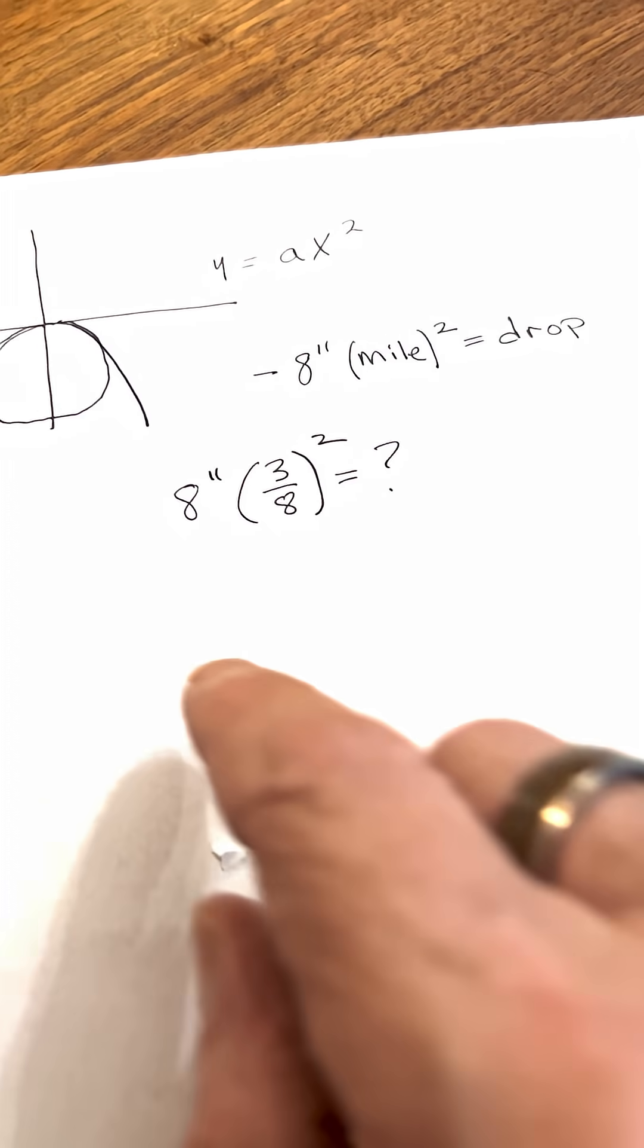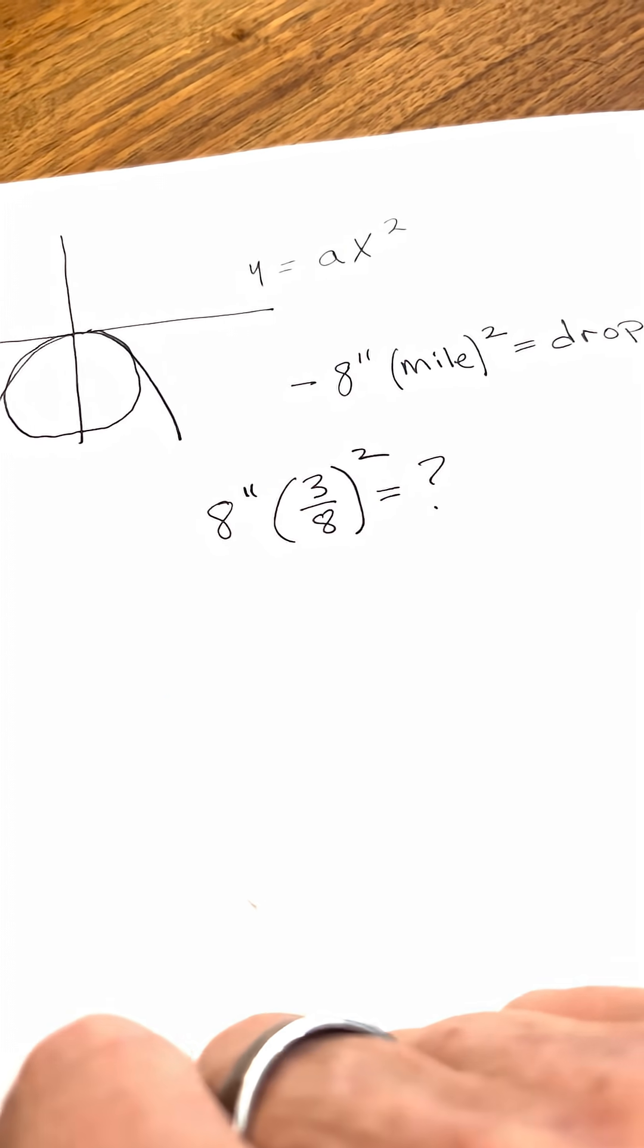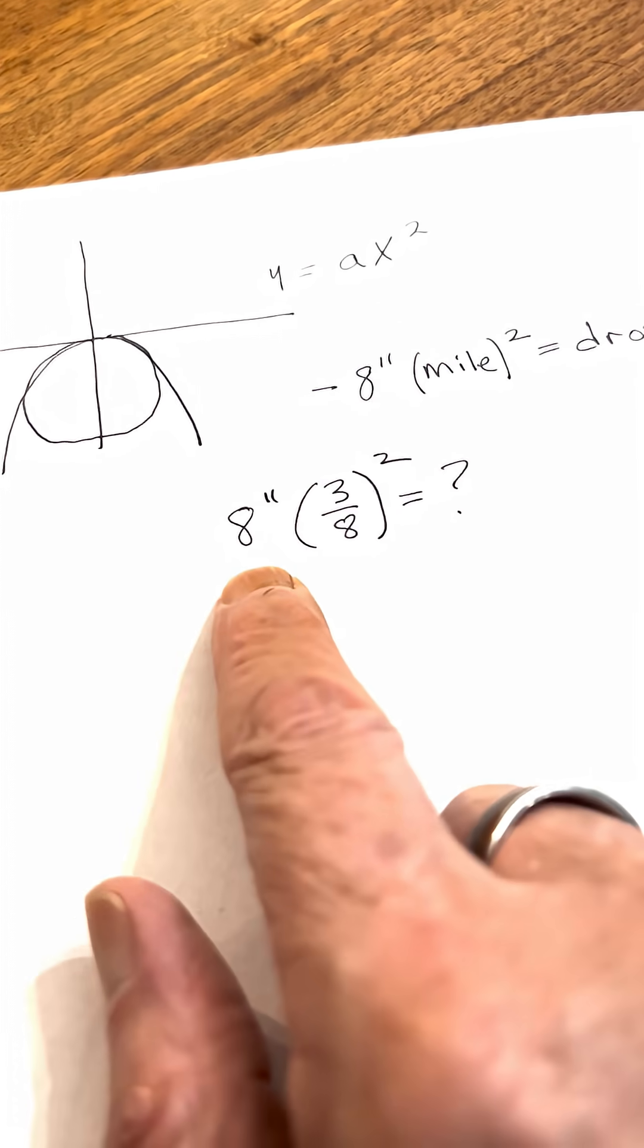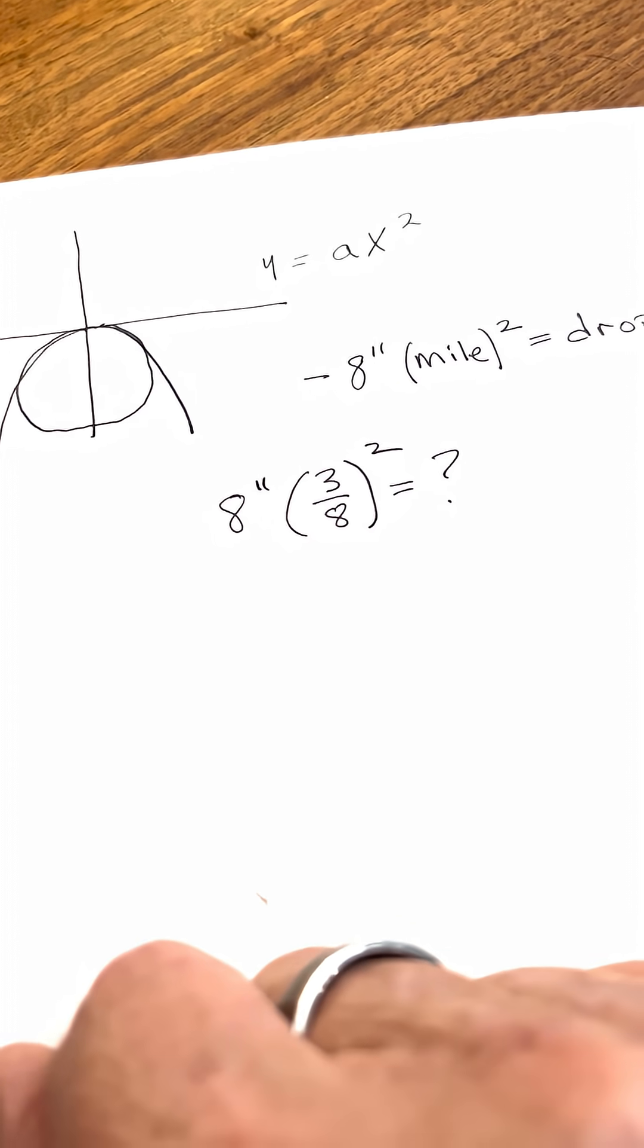Now the challenge that I gave them is tell me what according to this calculation the drop at 3 eighths of a mile would be. Here I've set the problem up. We have 8 inches times 3 eighths squared will equal the drop. Let's do the math.